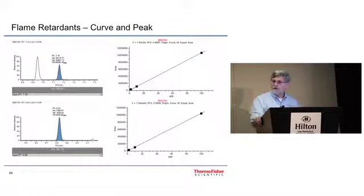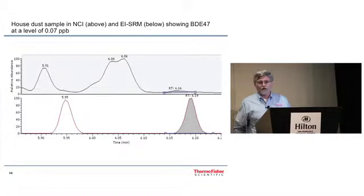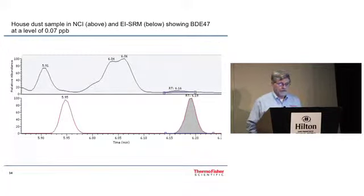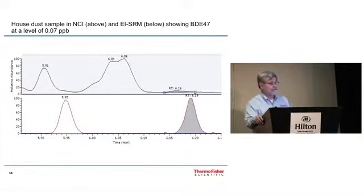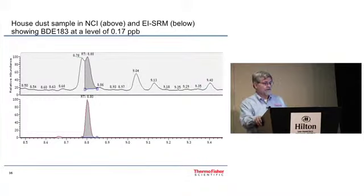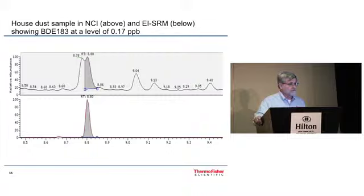Flame retardants, just going to show you a little bit on flame retardants. Peak shapes, curves for 100 and 183. Now most people are running single quad NCI to look at flame retardants. And this is an example comparing a single quad on the top with the triple quad on the bottom in EI SRM mode. And this is BDE 47 at 0.07 PPB. And you notice there's a big difference in peak shape. Here's another example of house dust, 183 at 0.17 PPB. The top being the single quad in NCI. And the bottom one EI on the triple quad. Again, it shows you the selectivity of the instrument.